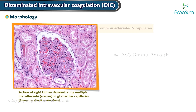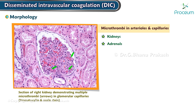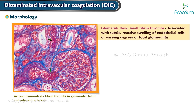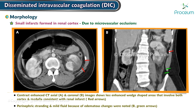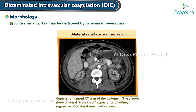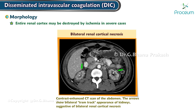Morphology. Microthrombi in the arterioles and capillaries of the kidneys, adrenals, brain, heart, and all other organs can occur. Glomeruli show small fibrin thrombi associated with a subtle reactive swelling of the endothelial cells or varying degrees of focal glomerulitis. Small infarcts are formed in the renal cortex due to microvascular occlusions. The entire renal cortex may be destroyed by ischemia in severe cases, causing bilateral renal cortical necrosis.